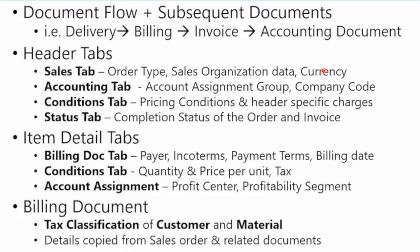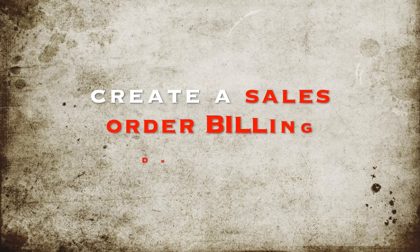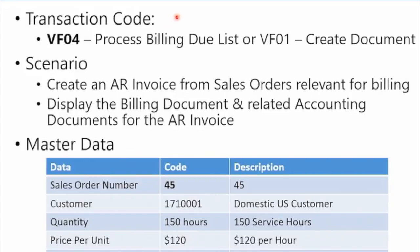As an overview: remember you've got a document flow where you can look at subsequent documents. In our example there wasn't a delivery before billing, but remember after the order you often have deliveries, billing, and invoice — and the invoice generates the accounting document. On the header tabs, pricing conditions are the most important ones to look at. Under item detail, conditions and account assignment are important. In the billing document, tax classification of the customer and material helps drive the detail, and most billing document details are copied from the sales order. Now let's look at how you actually create that invoice or billing document from the sales order.